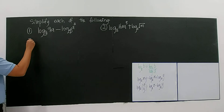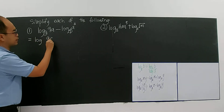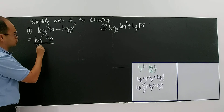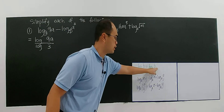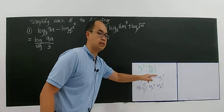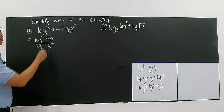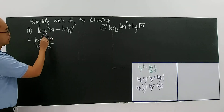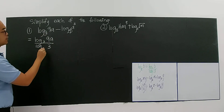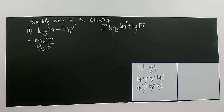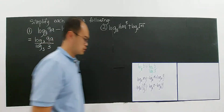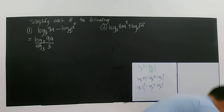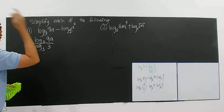So now you see that log 9A divided by log 3. Apply log B base A equals log B divided by log A. I need to change log 9 to log 3. So I have to change the log 9 base to base 3.